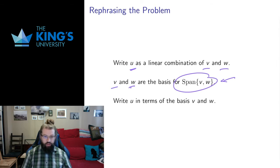So writing something as a linear combination is really writing it in terms of a given basis. So I want to rephrase the problem in terms of the problem of bases and then give you some methods to solve that problem using row reduction.